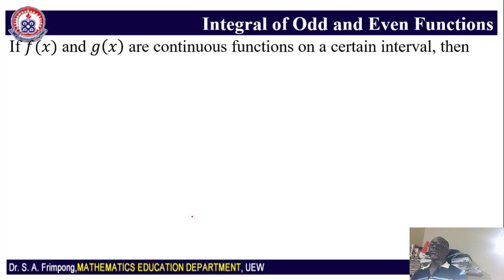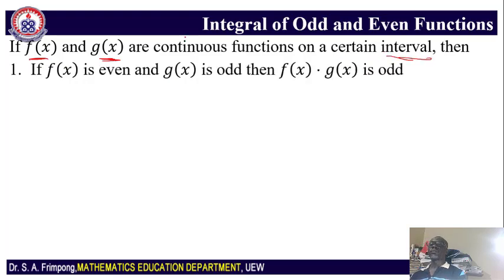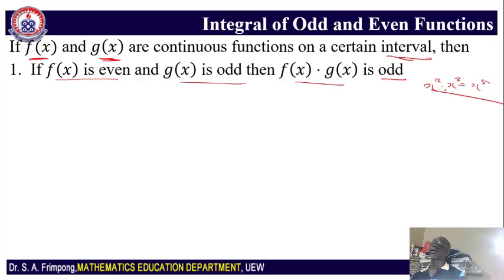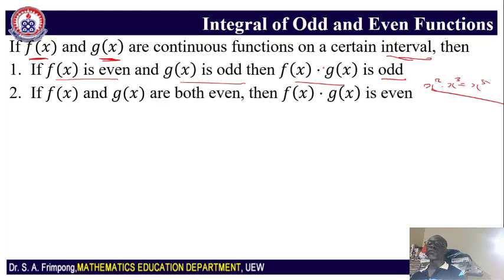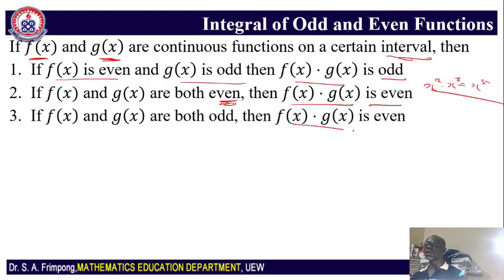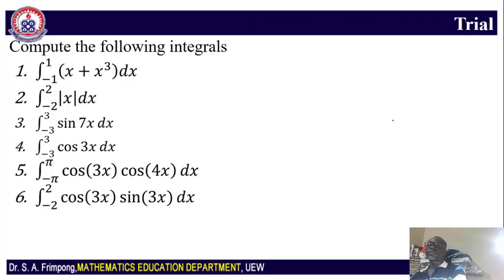Now let's continue with some properties of functions. If f(x) and g(x) are continuous functions on a certain interval, then if f(x) is even and g(x) is odd, their product is odd. And if f(x) and g(x) are both even, then the product is even. We are going to need these properties in our derivation of the Fourier series. Here are some trial questions for you to try.